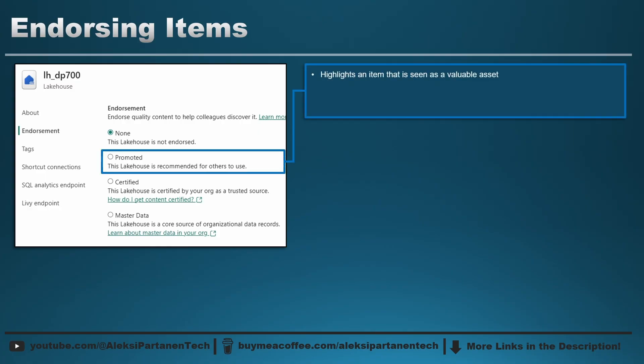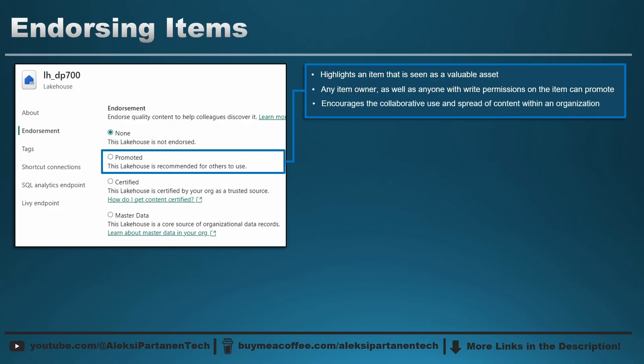First we have the promoted endorsement. This is the most unofficial of the three — it's for highlighting that a specific item is seen as a valuable asset and the person who promoted it recommends it for others to use. This endorsement doesn't require any special permissions; people who have the right level of permissions to a specific item can add the promoted endorsement. This is the only endorsement option available for all Fabric users by default, and its purpose is to encourage collaborative use and spread of content within an organization.